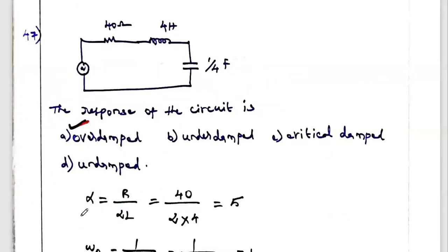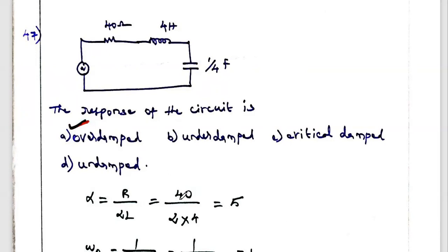We have to find the value of alpha. Alpha equals R divided by 2L. Here, the resistance value is 40 ohms and the inductance value is 4H. So alpha = 40 divided by (2 × 4) = 5. Similarly, we find omega-naught. Omega-naught equals 1 divided by square root of LC.